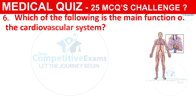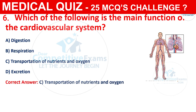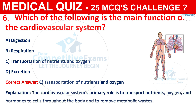Question 6: Which of the following is the main function of the cardiovascular system? The correct answer is C, i.e., transportation of nutrients and oxygen. The cardiovascular system's primary role is to transport nutrients, oxygen, and hormones to cells throughout the body and to remove metabolic waste.